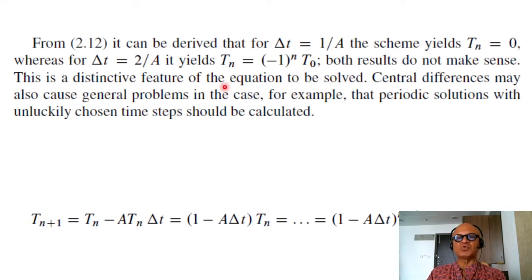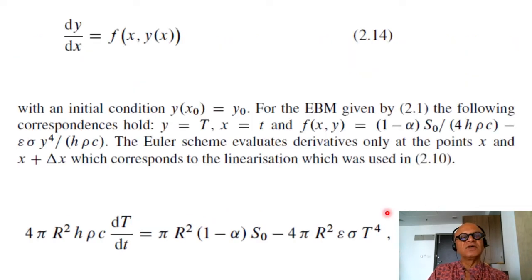So look at this expression 2.12 T_n+1 = T_n minus A*T_n*delta T which is very simple and straightforward. Makes sense when we start and then you keep writing this recursively for time step n+1 and then you can end up with issues.